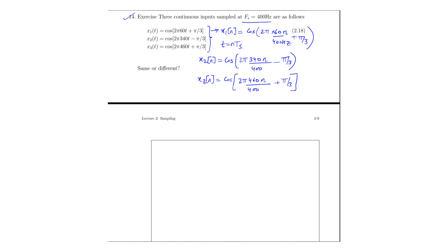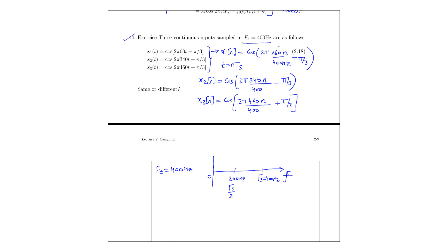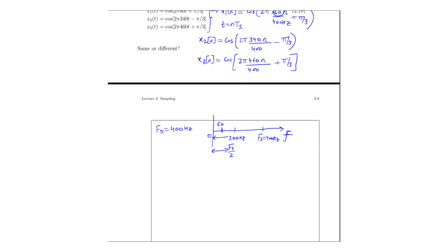Since 400 Hz is our sampling frequency, if we plot the frequency axis, fs = 400 Hz is at one end and fs/2 = 200 Hz is in the middle. The frequency 60 Hz lies within the principal band between 0 and fs/2, so it will not have any aliasing. Note that fs must be at least twice the maximum frequency content in the signal. Here fmax is 60 Hz, so fs needs to be at least 120 Hz, but we have 400 Hz — more than sufficient, so no aliasing for x1(n).